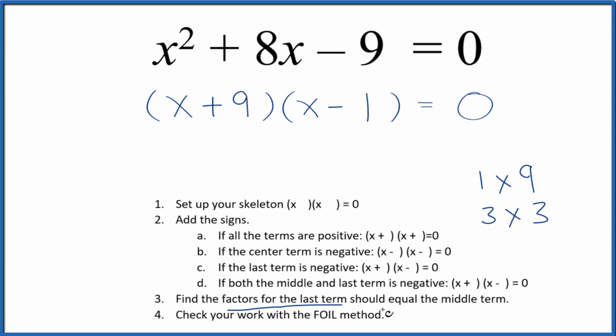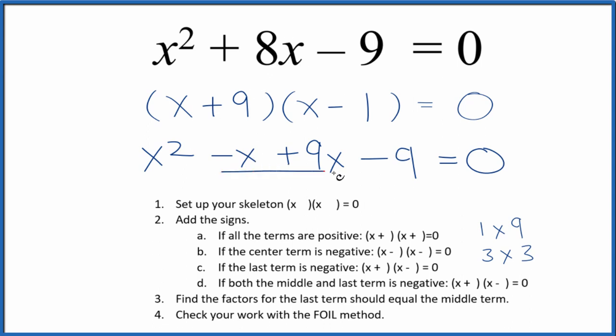And then we can check our work with the FOIL method. First, outside, inside, and last. When we do that, I can see negative x and 9x. That would give me 8x. And that's what I'm looking for.